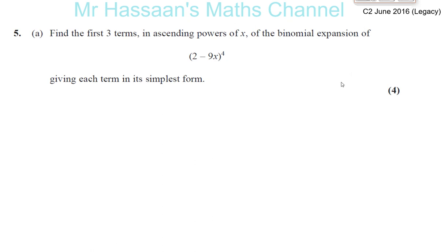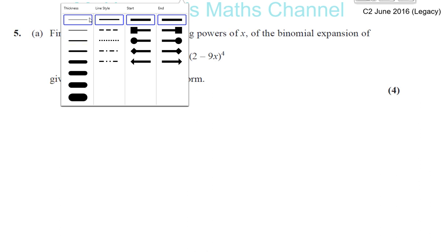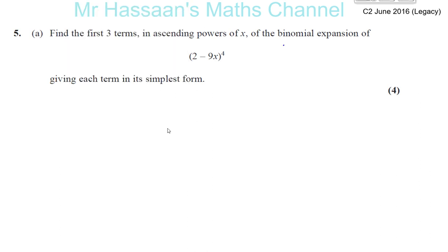So 5a, we're asked to find the first three terms in ascending powers of x of the binomial expansion of this particular expression, 2 minus 9x to the power of 4. We're starting off giving each term in its simplest form.